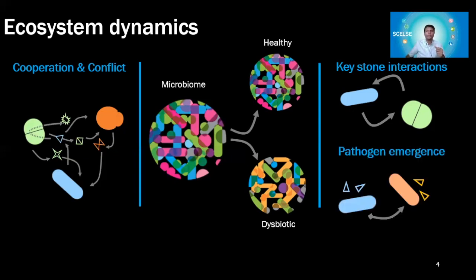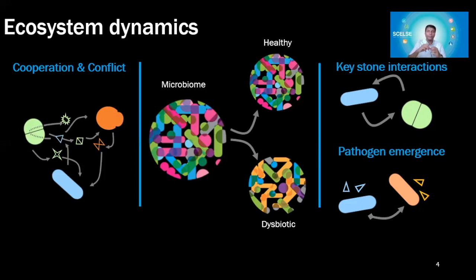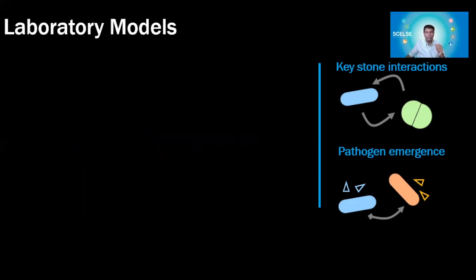The second thing when studying this is that we need to understand that key species can also emerge into a pathogen because of certain triggers. If we are able to understand those triggers upfront and monitor what is happening within the system, then we will be able to protect the system as well as prevent pathogen emergence from happening.